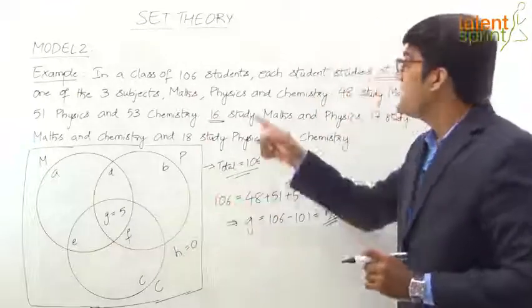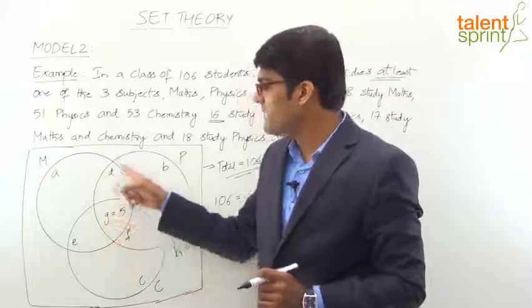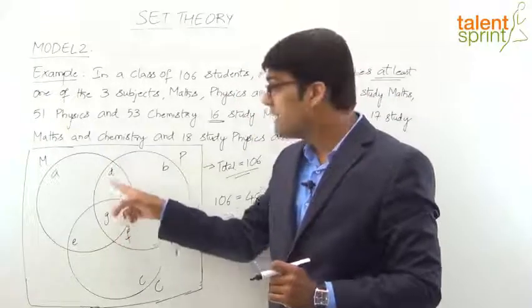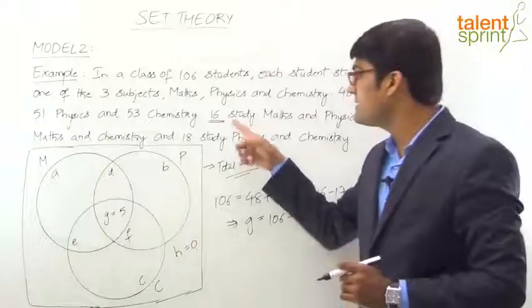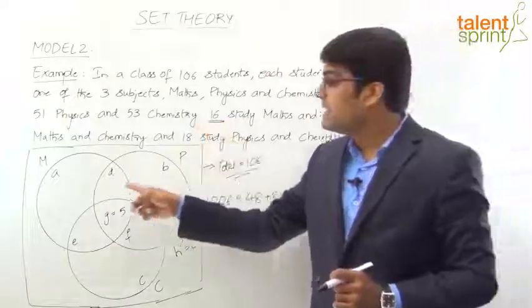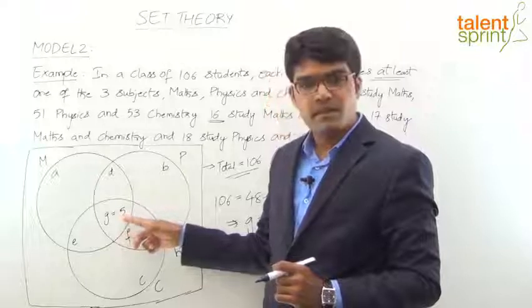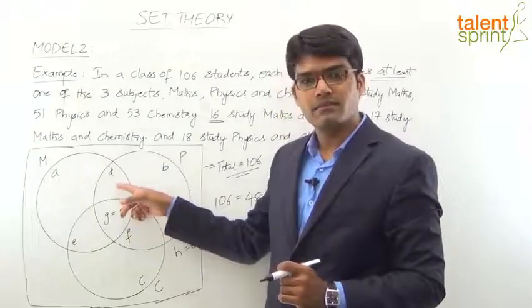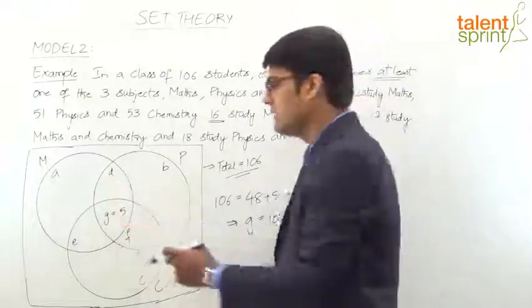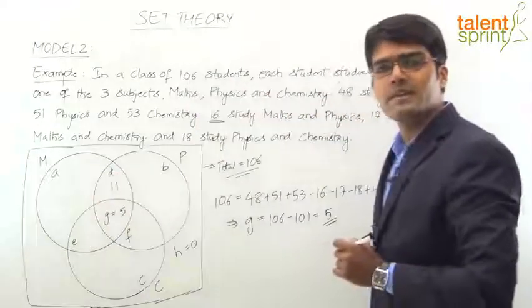Labeling the 8 regions a, b, c, d, e, f, g, h: Maths and Physics together is region D plus G. D + G = 16 (since 16 study Maths and Physics). Since G = 5, D = 16 − 5 = 11.